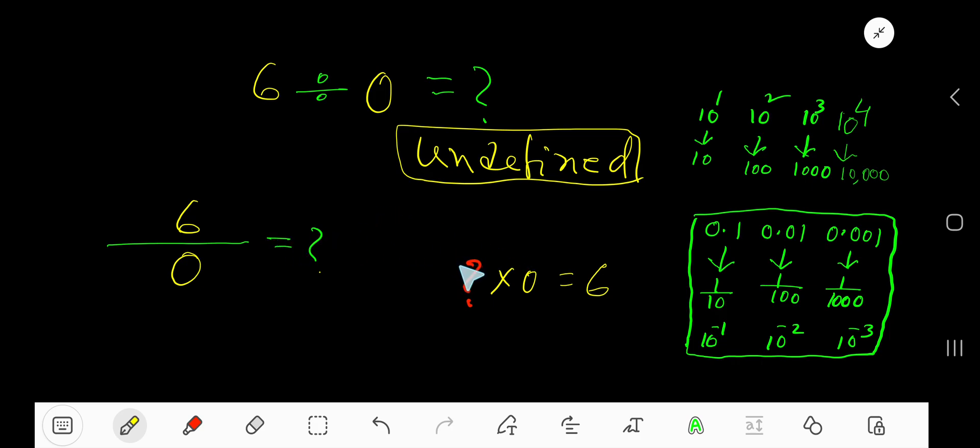In the case of writing a related multiplication statement, just multiply divisor times quotient equals dividend. Now think: what multiplied by zero gives you six? Let's say one: one times zero equals zero.